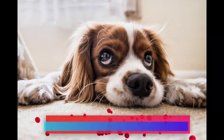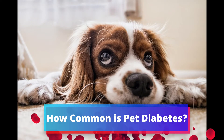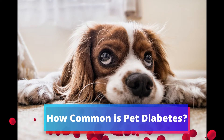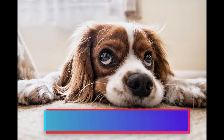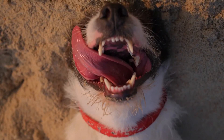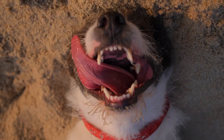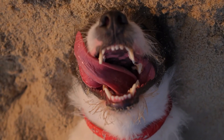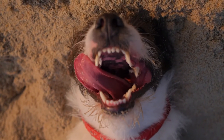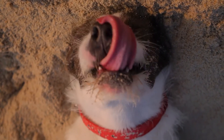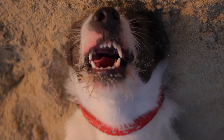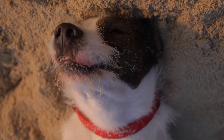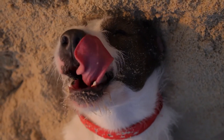How common is pet diabetes? Canine diabetes is more common in middle-aged and older dogs, but it is also seen in young dogs. While believed to be underdiagnosed, diabetes mellitus affects an estimated 1 in 300 dogs.